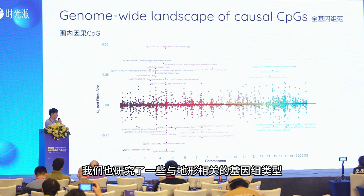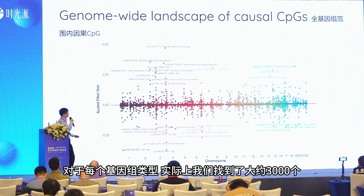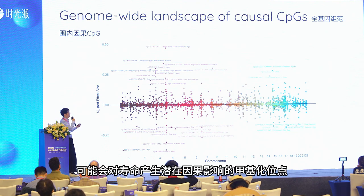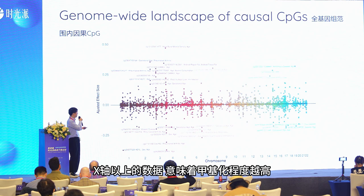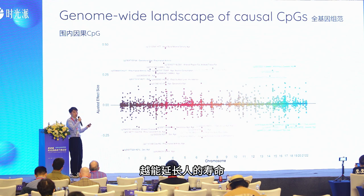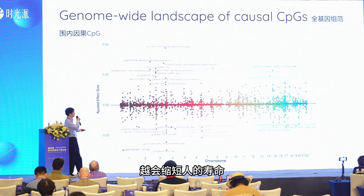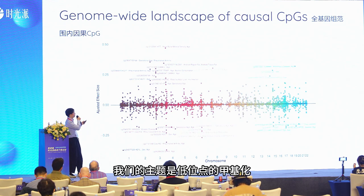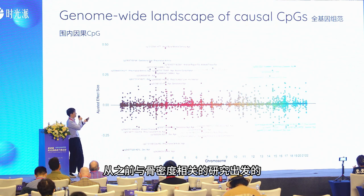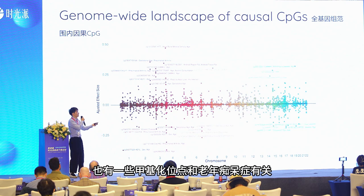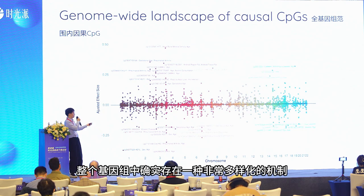For each phenotype, we studied multiple lifespan-related phenotypes and found around 3,000 methylation sites with potential causal effects on lifespan. Above the x-axis means higher methylation on that site will promote longevity; below x-axis means higher methylation will decrease lifespan. Our top hit is from the Huntington loci, related to bone mineral density from previous studies. We also found methylation sites related to Alzheimer's disease — very diverse mechanisms across the genome.